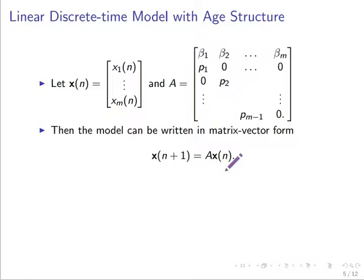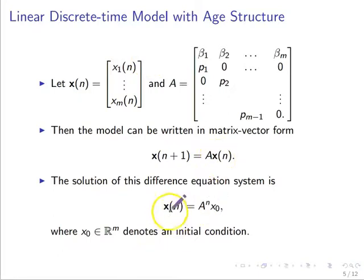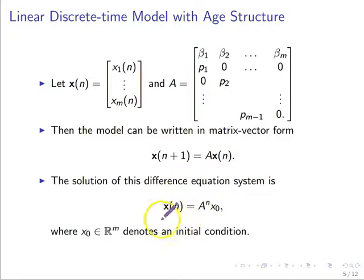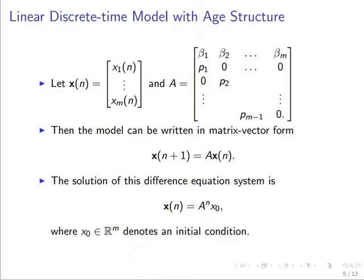This is a good time to make an observation. You can write a computer program to do this matrix-vector multiplication. You could also argue that the exact solution is in fact matrix A multiplied by itself n times, multiplied by the initial conditions. Either way, you can compute this state variable vector that holds the population sizes of each age group.